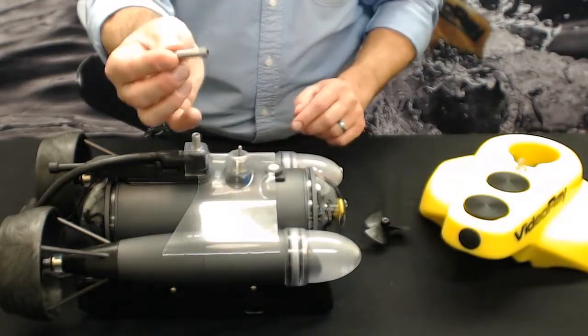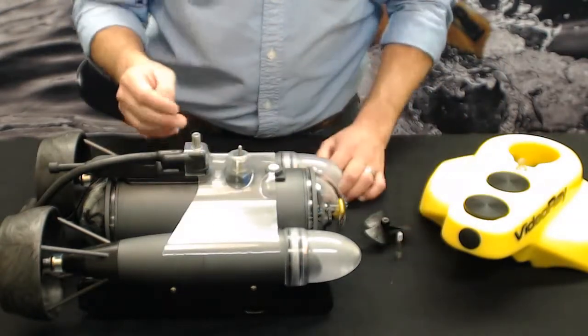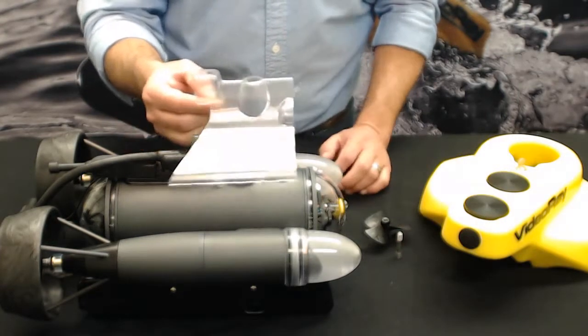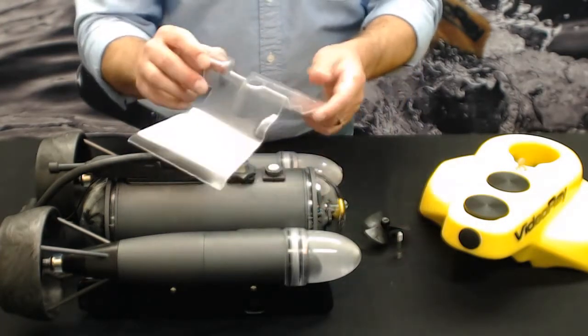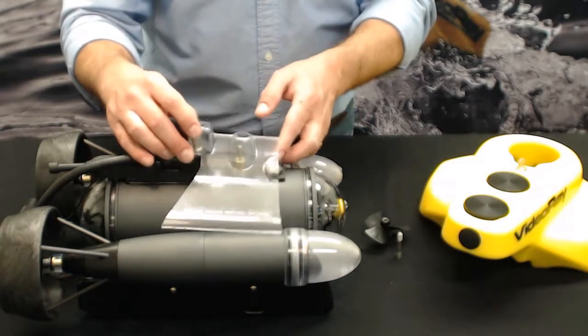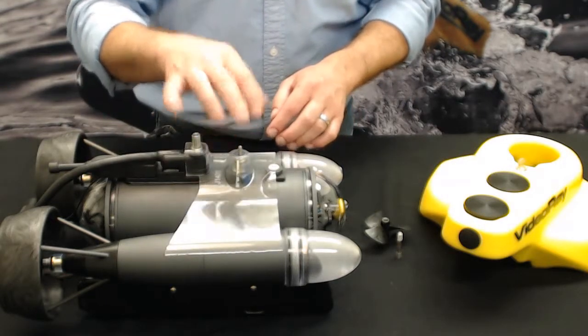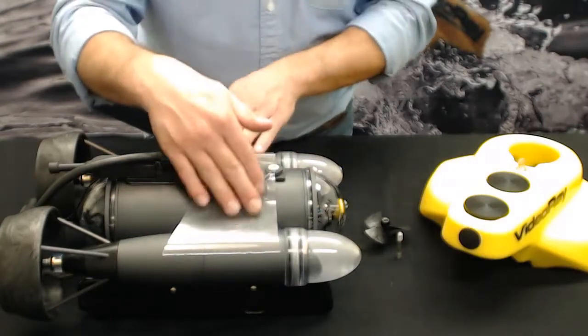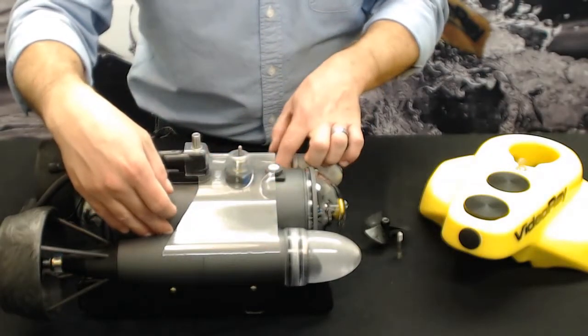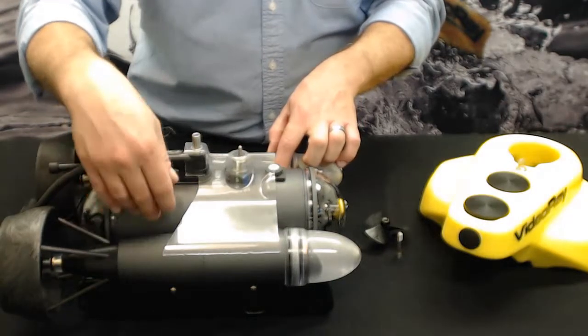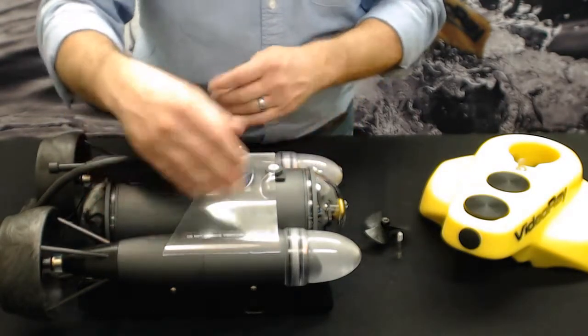We have one more additional piece here. This is called the vertical splitter. Basically, this is a molded piece of plastic that we apply over the top. What this does is when the vertical motor goes to dive or surface, this is channeling the water away from these crevices in between the thruster tube and the main pressure hull, making it much more efficient in diving and surfacing.